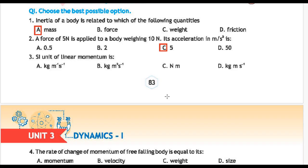Next question number 3: SI unit of linear momentum is — Option A: kilogram per meter per second, Option B: kilogram meter square per second, Option C: Newton meter, Option D: kilogram meter per second. Correct answer is Option D: kilogram meter per second.